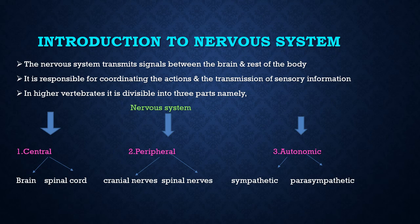The third part is Autonomic Nervous System. Autonomic Nervous System means it is a chain-like structure that is present on either side of the vertebral column. This Autonomic Nervous System is again divided into two types: one is Sympathetic and second is Parasympathetic.